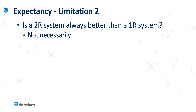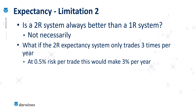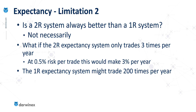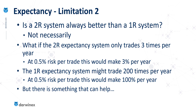There is a second limitation. Is a 2R system always better than a 1R system? Again, the answer is no. What if the 2R expectancy system only traded three times per year? Each trade on average would make 2R, but using a 0.5% risk model per trade, the system would therefore make just 3% per annum. But if the 1R expectancy system traded 200 times per year using the same 0.5% risk model, that system would make you 100% per annum. So although expectancy is useful in telling us what on average we should expect each trade to make, these limitations mean it is far from being a holy grail.